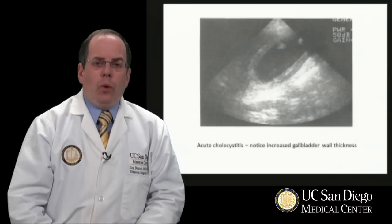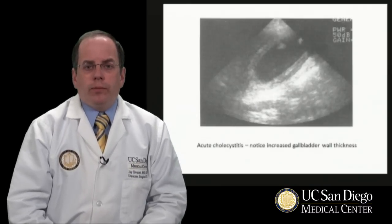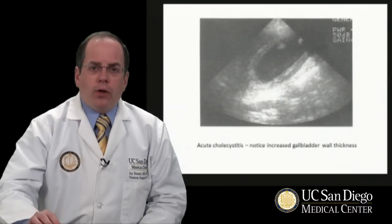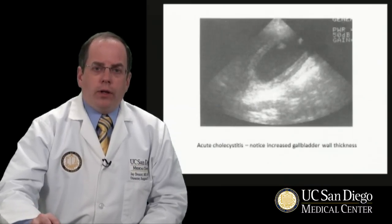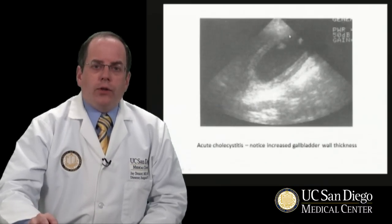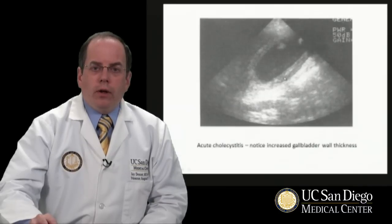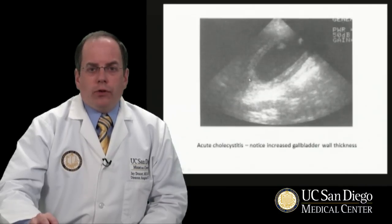Acute cholecystitis is picked up by the presence of pericholecystic fluid and by gallbladder wall thickening. And in this ultrasound, it's quite easy to see that the gallbladder wall is thickened, and there is also some pericholecystic fluid.